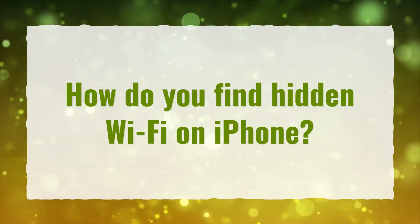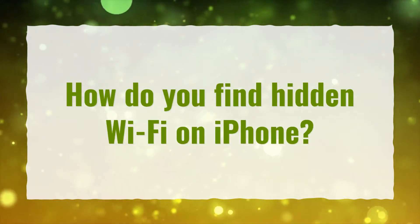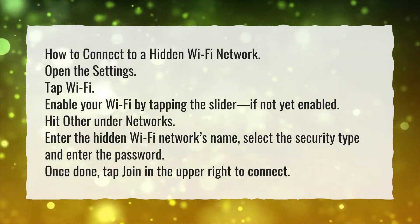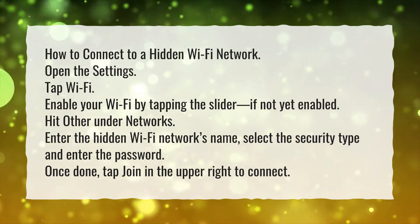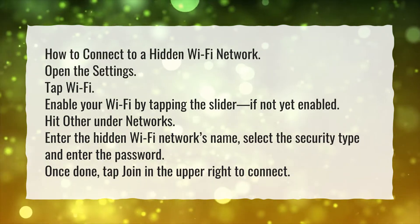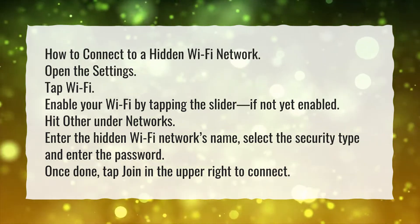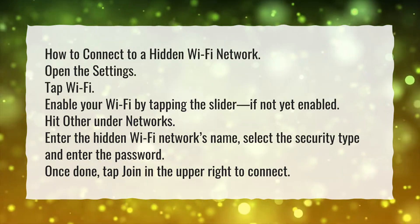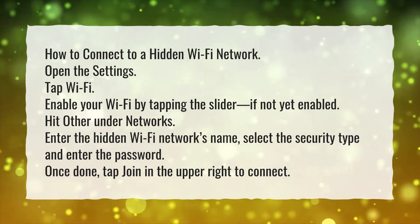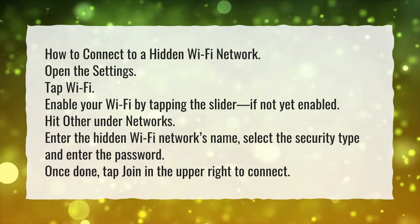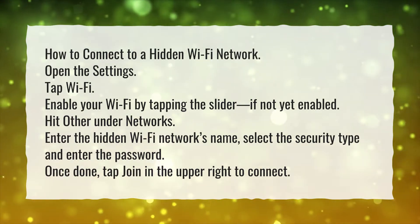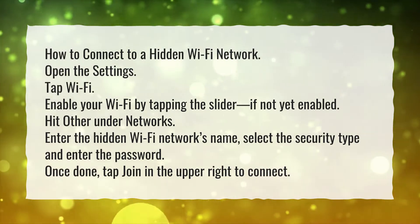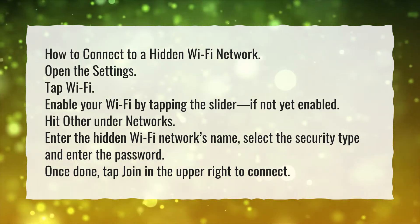How do you find hidden Wi-Fi on iPhone? To connect to a hidden Wi-Fi network, open Settings and tap Wi-Fi. Enable your Wi-Fi by tapping the slider if not yet enabled. Hit Other under Networks, enter the hidden Wi-Fi network's name, select the security type, and enter the password. Once done, tap Join in the upper right to connect.